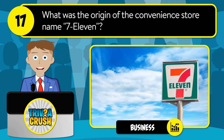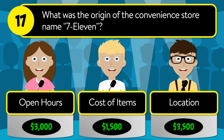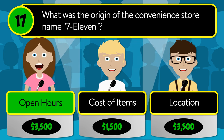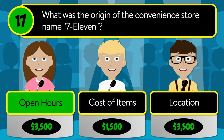Question number seventeen: what was the origin of the convenience store named 7-Eleven? Was it open hours, cost of items, or location? The correct answer is open hours.